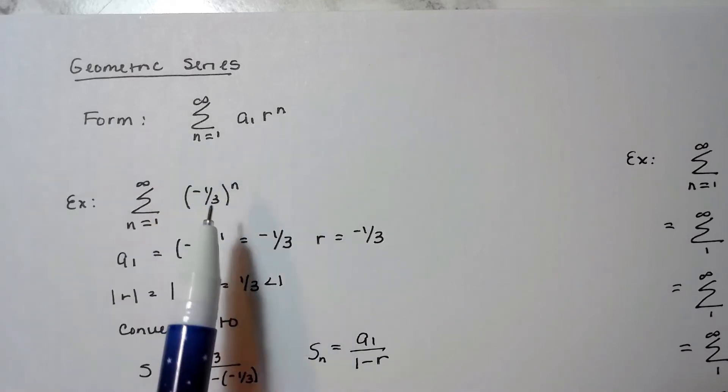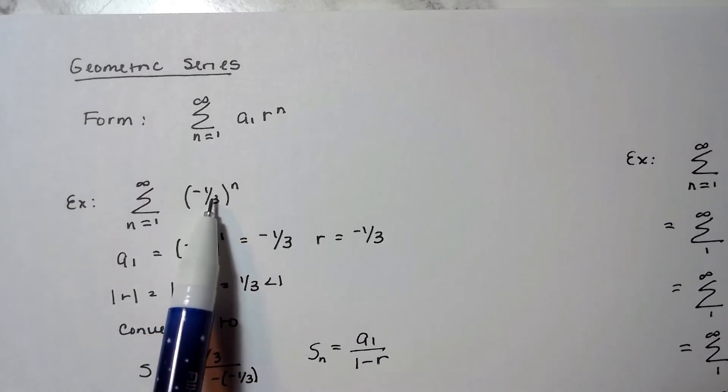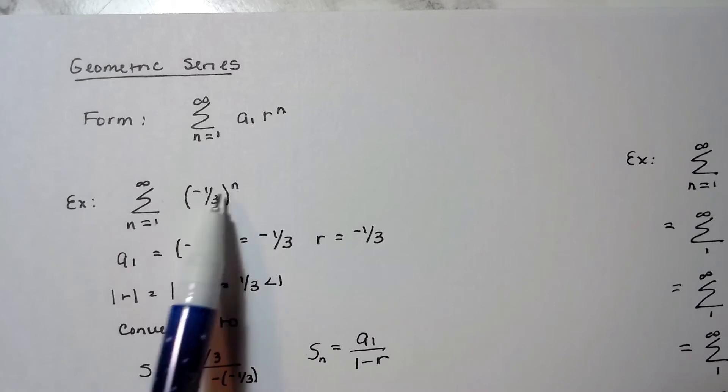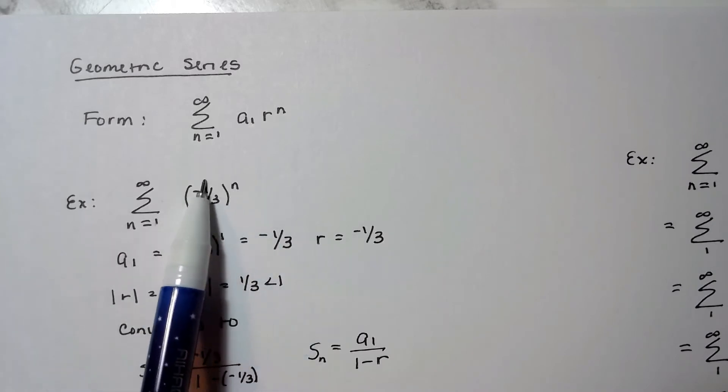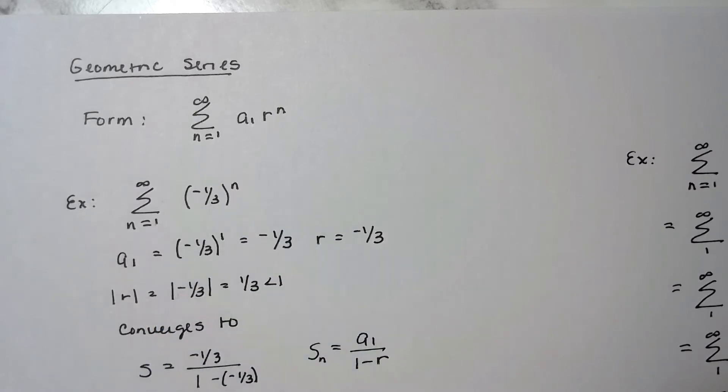The simplest of this type of a series is like this example here. I have a number raised to power. Now if I want to find my first term, I plug in whatever number is here, so in this case it's a 1, so my a sub 1 is negative 1/3. And my r, the common ratio of the geometric series, is always whatever this is here, and it's negative 1/3.